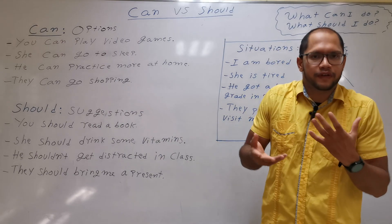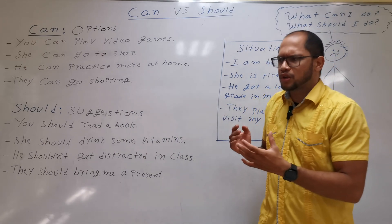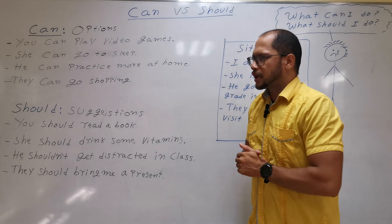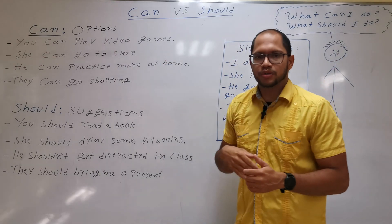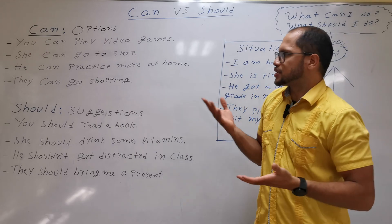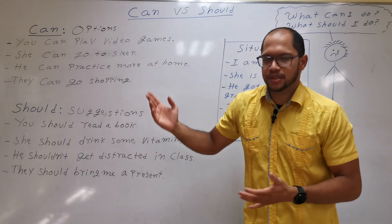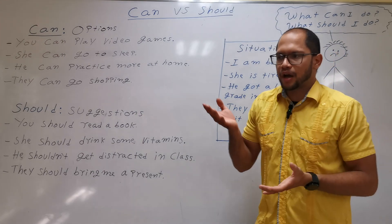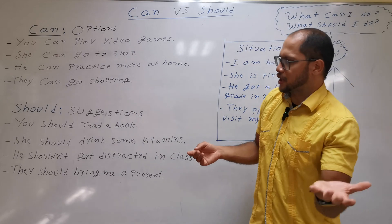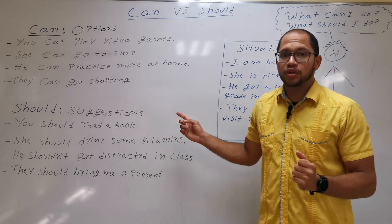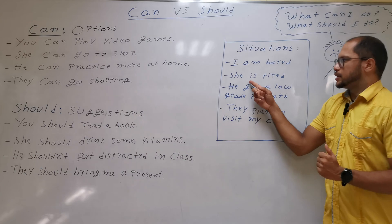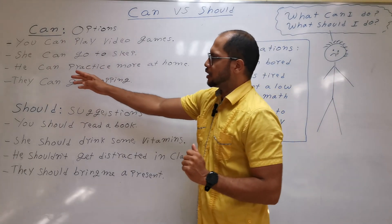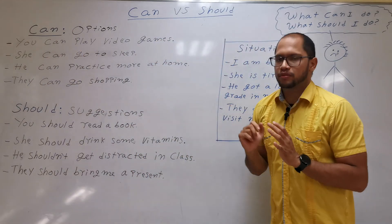It's beneficial for you — some social interactions. You should go out with your friends. You could also say 'you should play video games' — or 'you can play video games.' That depends on you: are you giving it as an option or as a suggestion? It's up to you. Here we have another example: 'She is tired.' For options, she can go to sleep.